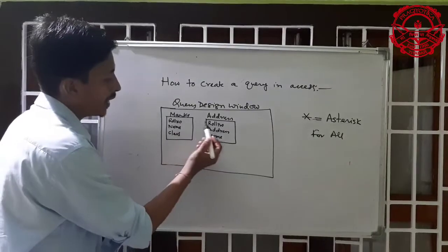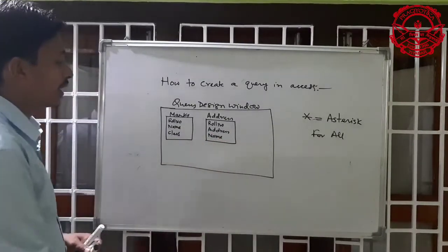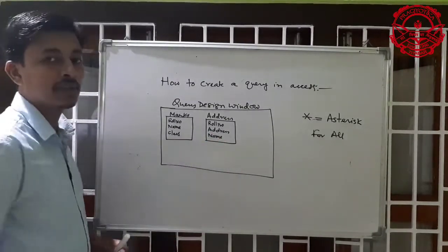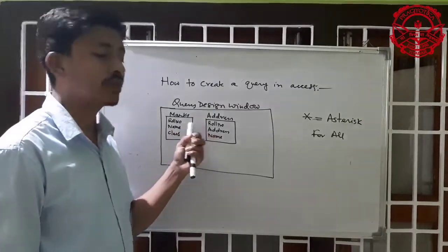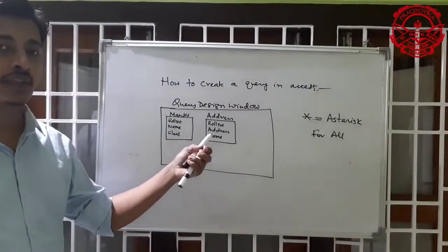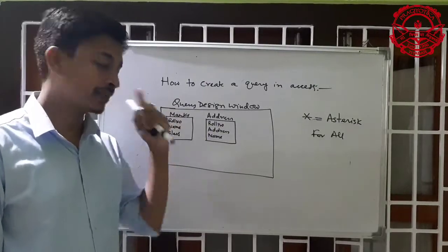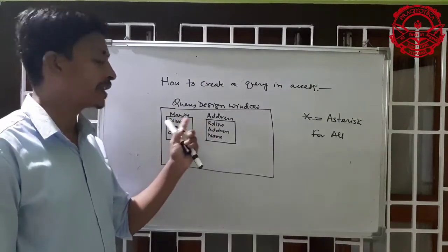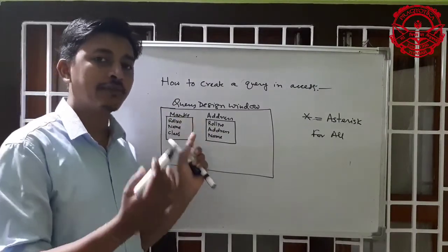You can see the roll number is the same in both tables, and name is also the same. The roll number is a unique key — it is the primary key in one table and the foreign key in the other, linking the two tables.